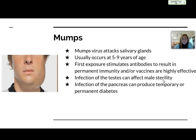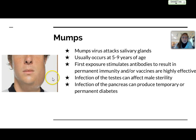I'm going to go over a few diseases and disorders. Mumps is the first one — it's a virus that attacks your salivary glands, which is why you see the boy's face really swelled up in the area of the salivary glands. This usually occurs at five to nine years of age, but we have vaccines now that usually prevent getting it. However, if you do get mumps, the first exposure will usually stimulate antibodies that will result in permanent immunity, so you'll never get it again.